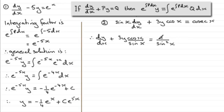So it's now in the correct format. You can see that p, which is a function of x, is going to be 3·cos(x) over sin(x), and q is going to be 1 over sin squared x. We next need to work out what our integrating factor is — that is e to the integral of p dx.